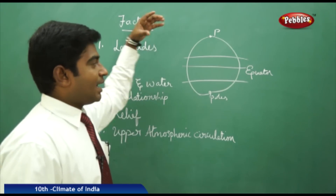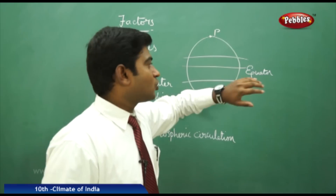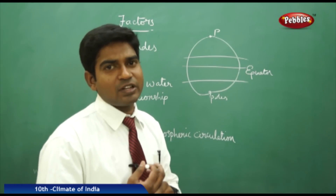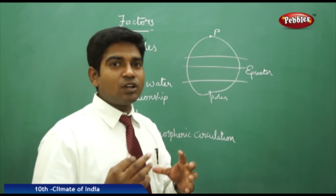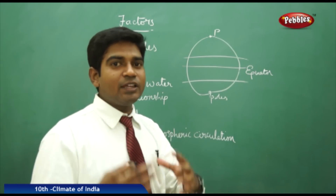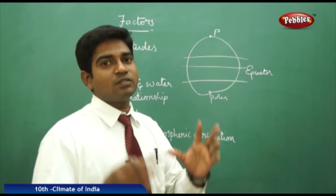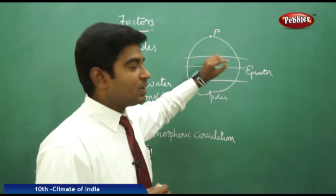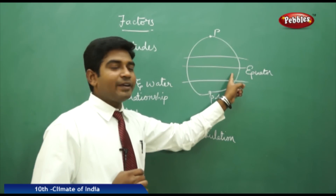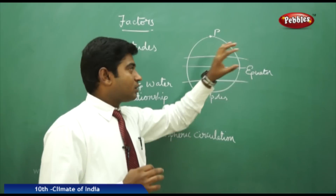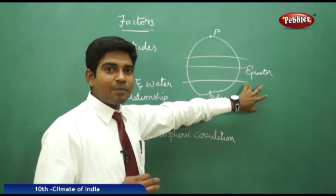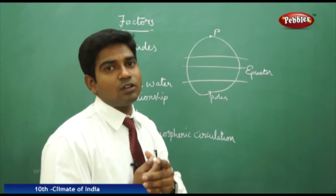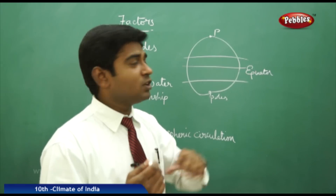The zero degree latitude is called the equator. All latitudes are imaginary lines drawn for our convenience to study and assess the location of various places. The places nearby to the equator, or between the Tropic of Cancer and the Tropic of Capricorn, receive the largest amount of solar radiation.